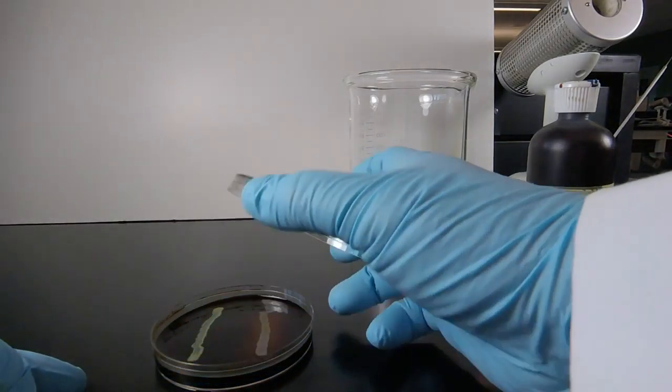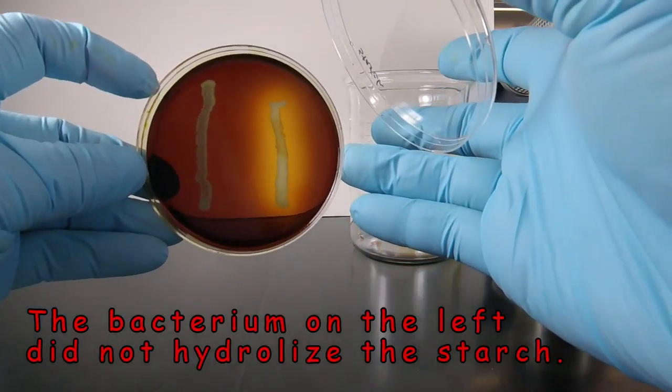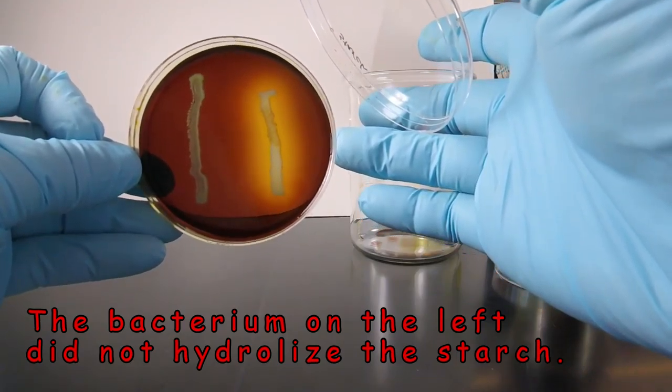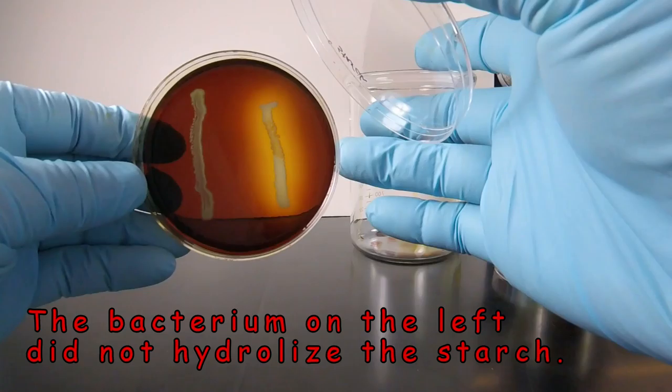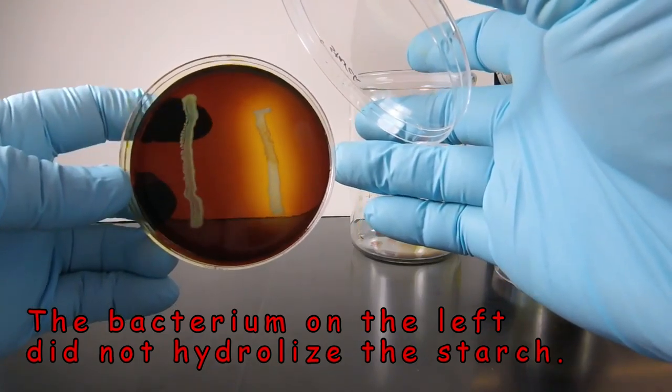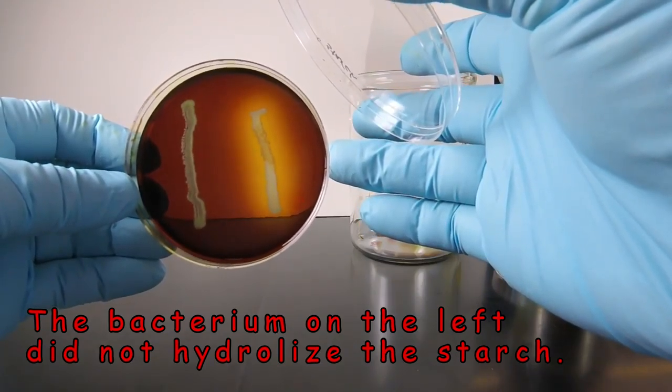If we take a look at the results here, we'll notice that the bacterium on the left, the agar has turned a brown color where the starch is still present and has reacted with the iodine. We notice right up to the bacterial growth it all appears brown. So the organism on the left did not hydrolyze the starch.